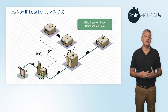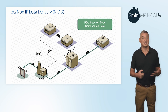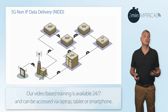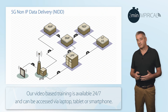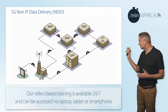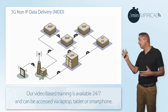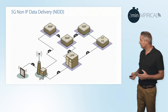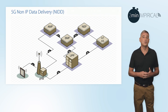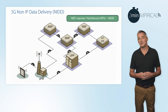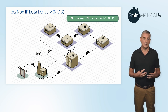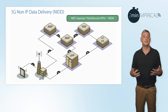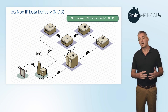There is an alternative method for carrying NIDD, non-IP data delivery. This can be achieved using a new node referred to as the NEF, the network exposure function, which connects between our IoT application server and the SMF, the session management function. In this case, our non-IP data will be carried via the NEF down to the SMF, because the NEF can now expose northbound APIs, one of these being NIDD, non-IP data delivery.